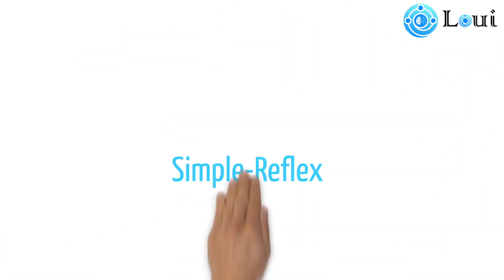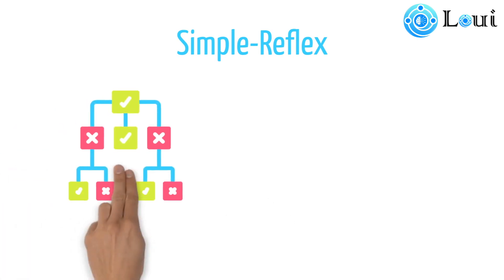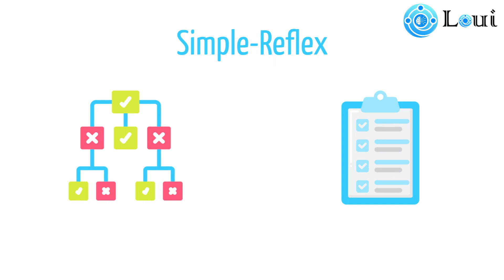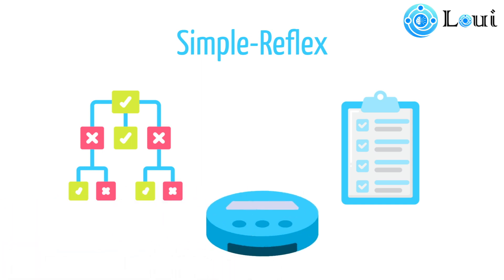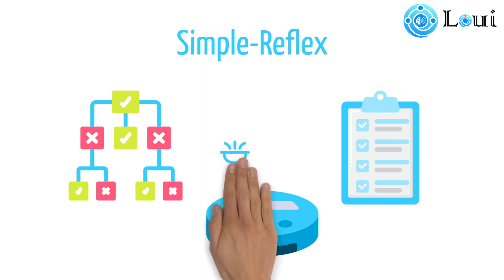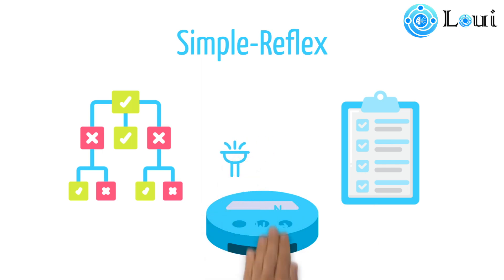First, there are simple reflex agents. These are the most basic type of agents. They make decisions based on a condition — if the condition is true, then the action is taken, else not. An example of a simple reflex agent is the robotic vacuum cleaner: if the ground is dirty, it sucks; else it continues moving.